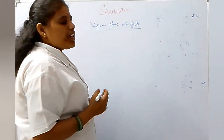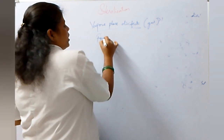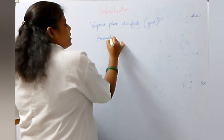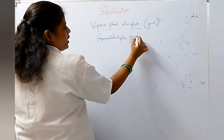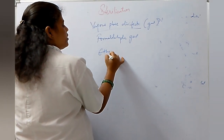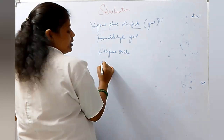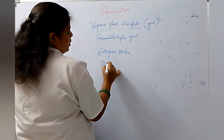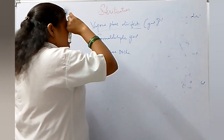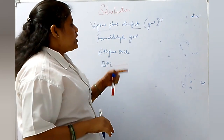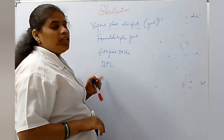Vapor phase disinfectants are mostly gases. We have formaldehyde gas, ethylene oxide, and BPL which is beta-propiolactone.